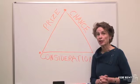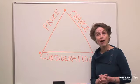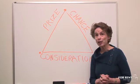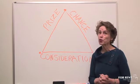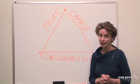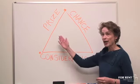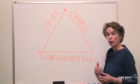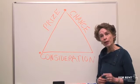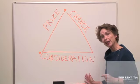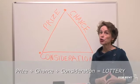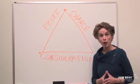So what makes your promotion actually illegal? What makes it cross over the line and become a lottery? It crosses over the line when you use all three sides of the triangle. If you have a prize that you are offering, and you are having people take a chance to win it, and you are also making them give you some consideration — that's all three sides of the triangle, and that is what can get you in trouble.